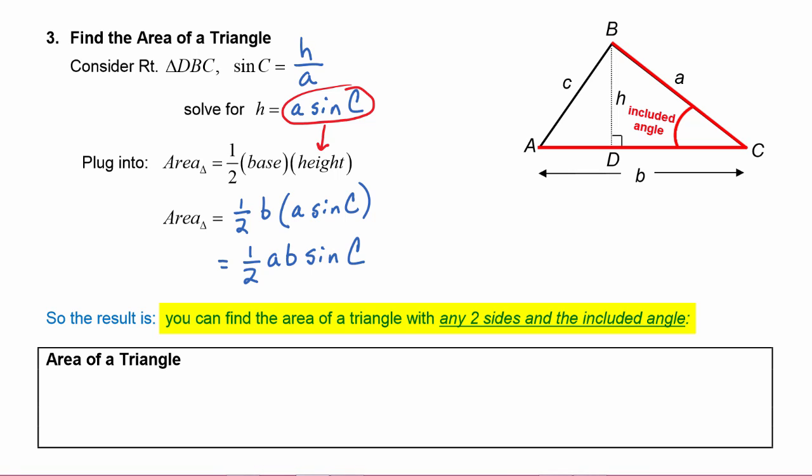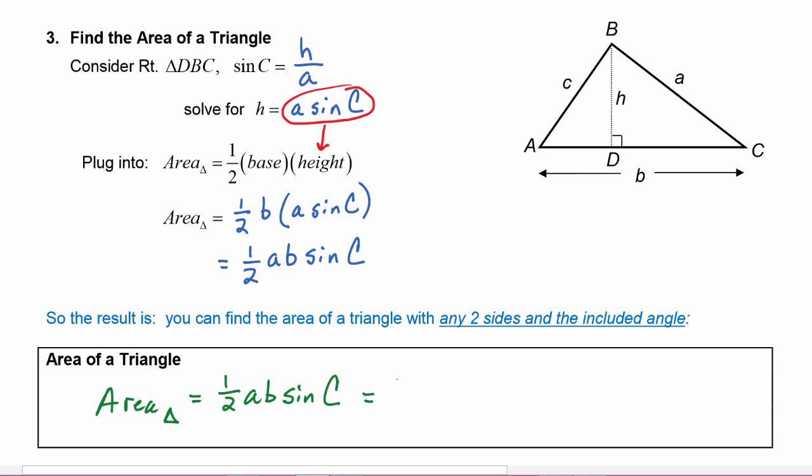So as we just discovered, we can find the area of a triangle by doing one half ab sine C. Now we could pick another set of sides and their included angle. For example, we could say one half bc sine A, because side b and side c include angle A.